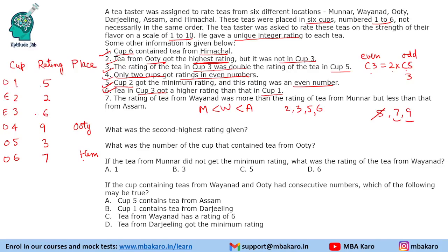Now let us answer the questions. The first question asks: what was the second highest rating given? The second highest is 7. The second question asks: what was the number of the cup that contained tea from Uti? Uti is in cup number 4.